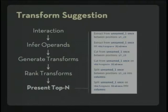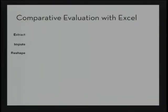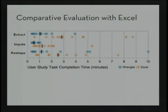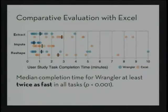To evaluate how well the tool works, we compared it with Excel — the most widely used data manipulation tool in the world. We used a very small dataset — in no case exceeding 30 values — testing three common data cleaning tasks: extracting individual elements from strings, imputing missing values, and performing table reshaping operations. We measured task completion time for both Wrangler and Excel in a within-subjects design. In all cases, the median completion time for Wrangler was at least twice as fast as Excel — exciting, especially since this was with very small datasets where manual manipulation is completely feasible.